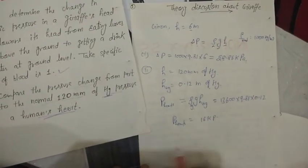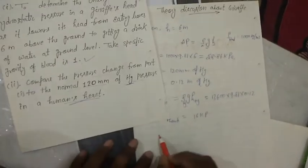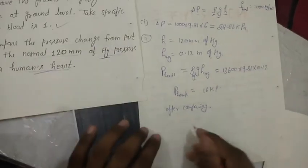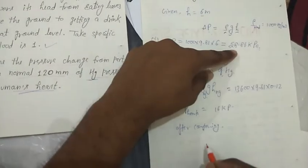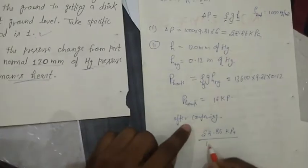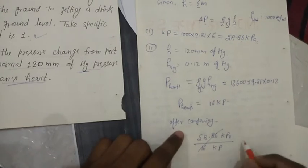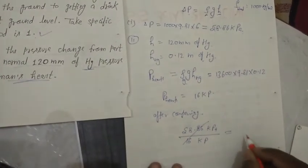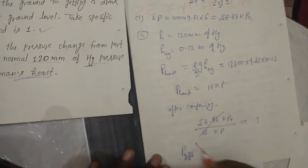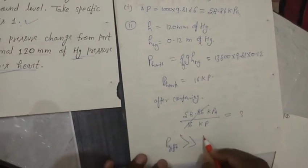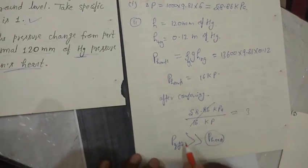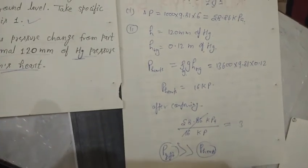After calculating, human heart pressure equals 16 kPa. Comparing the two results: giraffe pressure is 58.86 kPa and human heart pressure is 16 kPa. Dividing these values, the giraffe's pressure is almost three times greater than human heart pressure. This shows that the giraffe maintains a very high blood pressure. Thank you.